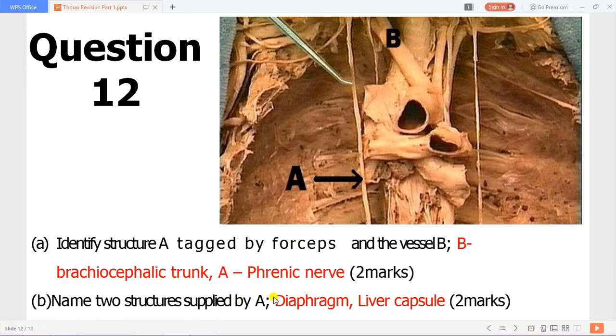Two structures supplied by A. A is the phrenic nerve, specifically the right phrenic nerve. It supplies the diaphragm and the capsule of the liver, which is also known as Glisson's capsule.